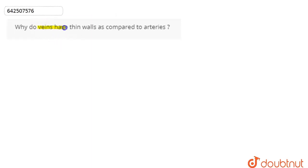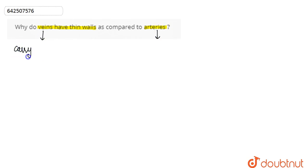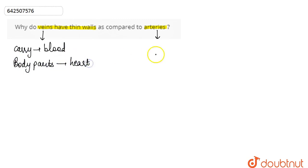In this question, we are asked: why do veins have thin walls compared to arteries? First, let's discuss the functions of veins and arteries — both are blood vessels. The function of a vein is to carry blood from body parts back to the heart.